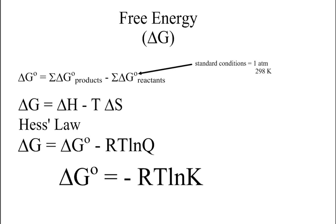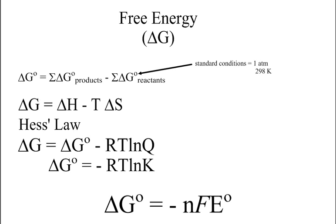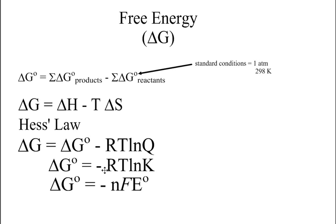Remember that once we reach equilibrium, E naught is going to equal 0 because the battery is officially dead then — we're tying this back to electrochemistry. At equilibrium the cell potential is 0. Lastly, we can tie this back to the Gibbs equation from electrochemistry: free energy equals the negative of the number of moles times Faraday's constant times the cell potential. You can remember this as Delta G equals minus nFE, and for non-standard conditions as Delta G equals Delta G naught plus RT ln Q.